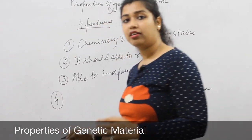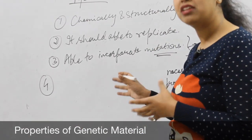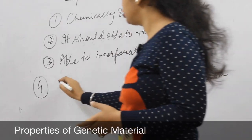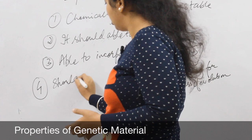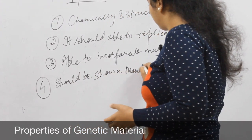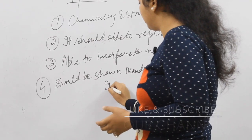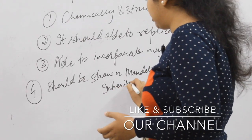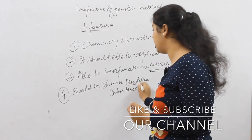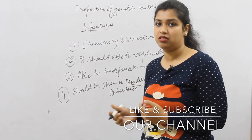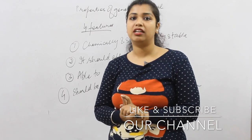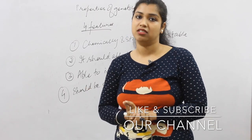The last feature which makes DNA the genetic material is that it should show Mendelian inheritance. Jo aapka inheritance of genetic material hota hai, it should be in the Mendelian way or Mendelian system. So this sums up our topic for DNA as genetic material, its discovery and its properties. Thank you so much.